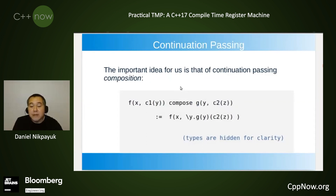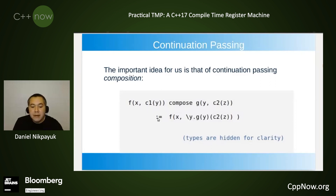The important idea for us is that continuation passing has its own form of composition. We have a continuation passing function F, and we compose it with another continuation passing function G. With F, we apply some behavior to the input X and then pass the output to this function C1 — that's regular continuation passing. For composition, we take that output and pass it to the Y component of function G, which itself performs some behavior and passes it to function C2.